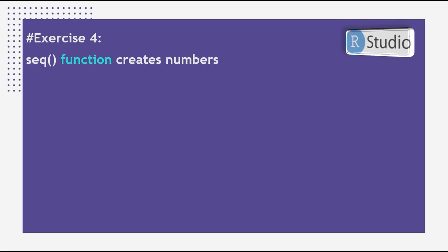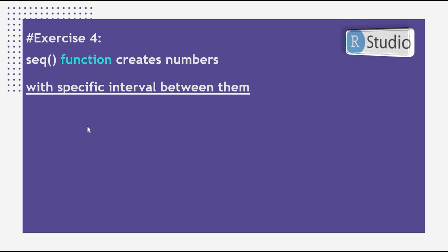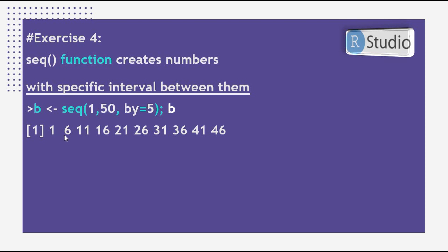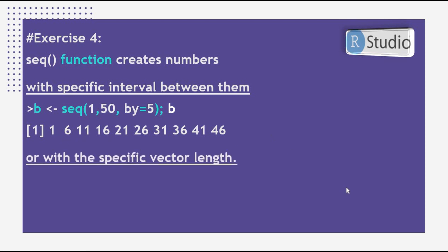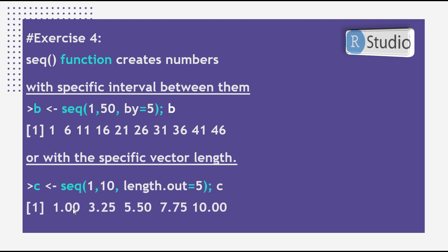In Exercise 4, we use the seq() function to create a vector with a specific interval between numbers. For example, to create a vector from 1 to 50 with a step size of 5, you write seq(1, 50, by=5) and get 1, 6, 11, 16, and so on. The seq() function can also create a vector of a specific length — for example, a vector from 1 to 10 with only 5 numbers.